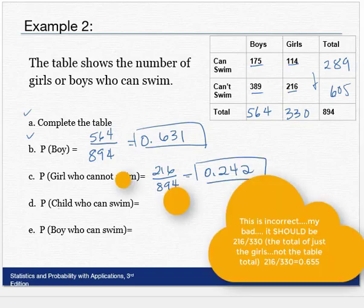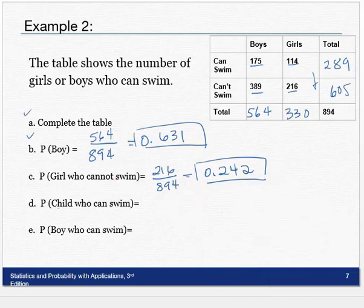Part D: Probability of a child who can swim. So it doesn't matter, boys or girls who can swim. Look at the total column: 289 out of 894 gives me 0.323.